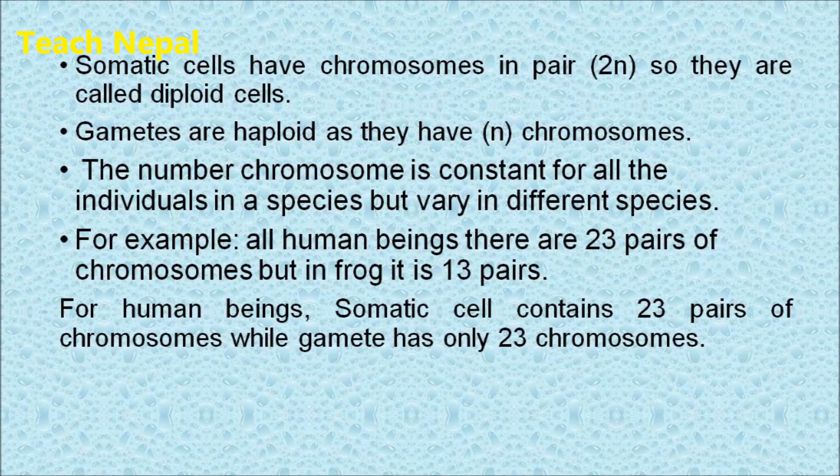For example, for human beings there are 23 pairs of chromosomes, meaning there are 46 chromosomes in a single individual. Other species have different chromosome numbers, but within a species the number is constant. For human beings, the somatic cell contains 23 pairs of chromosomes.